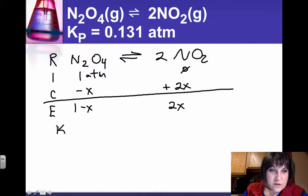So if Kp is equal to products over reactants, whoops, not brackets, because I have equilibrium values. So it's the pressure of NO2 squared over the pressure of N2O4, not squared.